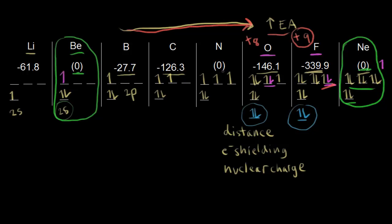For nitrogen, it's also an exception with an electron affinity value of 0 — you have to force it to accept an electron as well. That's because nitrogen has one unpaired electron in each of its 2p orbitals, which is an unusually stable electron configuration. If you try to add an electron, it's already happy the way it is. This unusually stable half-filled p orbital configuration is the reason nitrogen doesn't follow the general period trend for electron affinity.